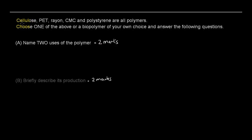I'll read out the question. Cellulose, PET, Rayon, CMC, and polystyrene are all polymers. Choose one of the above or a biopolymer of your own choice and answer the following questions. A. Name two uses of the polymer, and B. Briefly describe its production. In this video, I'm going to cover cellulose, but you can choose whatever polymer you want — those four, or a named biopolymer of your choice, such as polylactic acid or BHT or anyone that you would cover in your course.